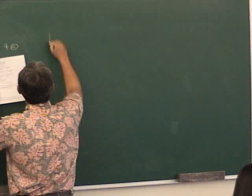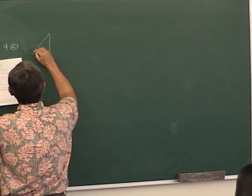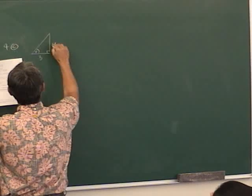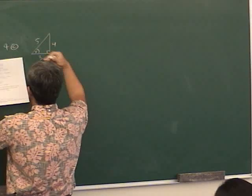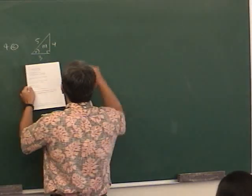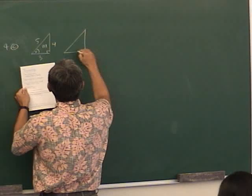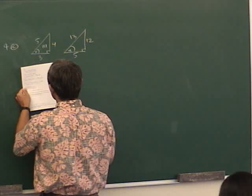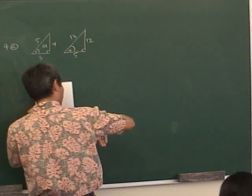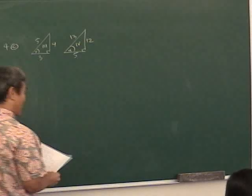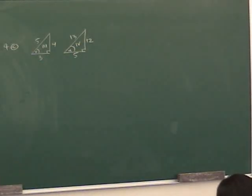Cotangent x is 3/4 — so are you drawing the reference triangle the way your teacher taught you, or the way I showed you? That's a 3-4-5 triangle, and if you're between π and 3π/2, you are in the third quadrant. Secant of angle y is 13/5, so that's a 5-12-13 triangle, and if you're between −π/2 and 0, you are in the fourth quadrant. You have to keep track of the quadrant.